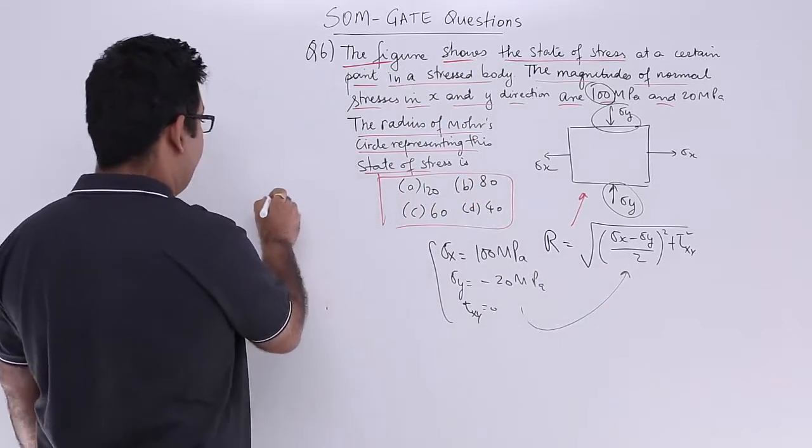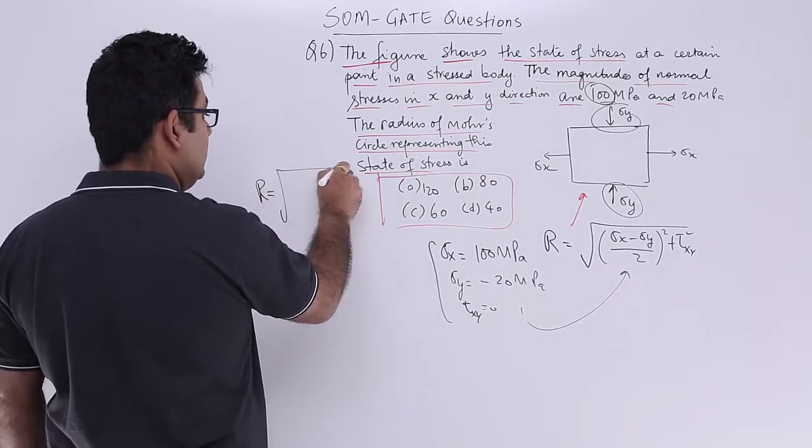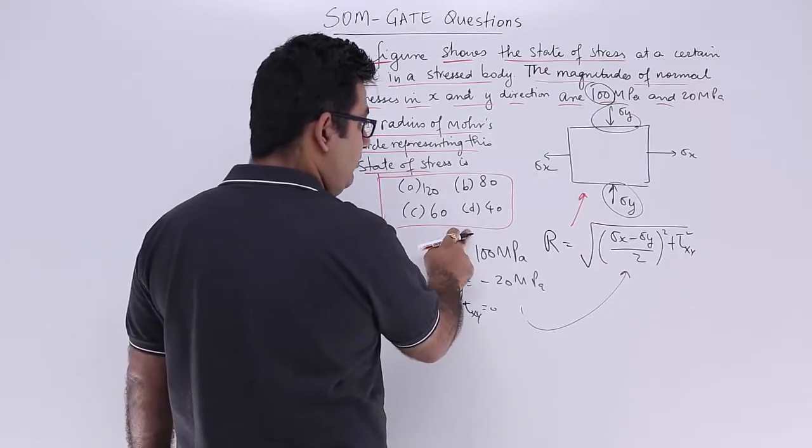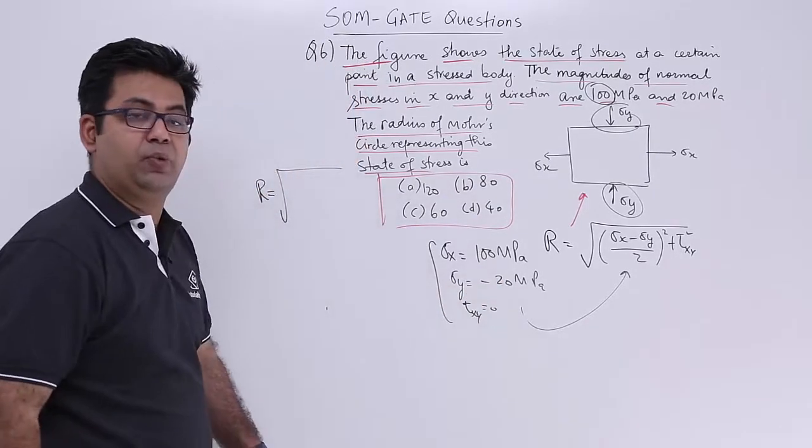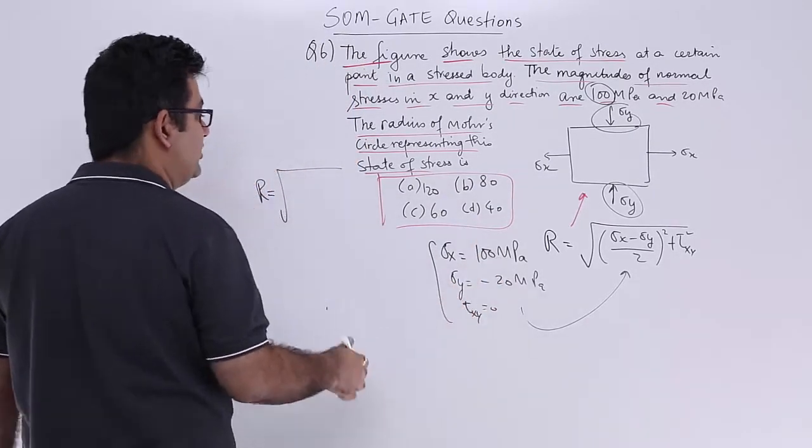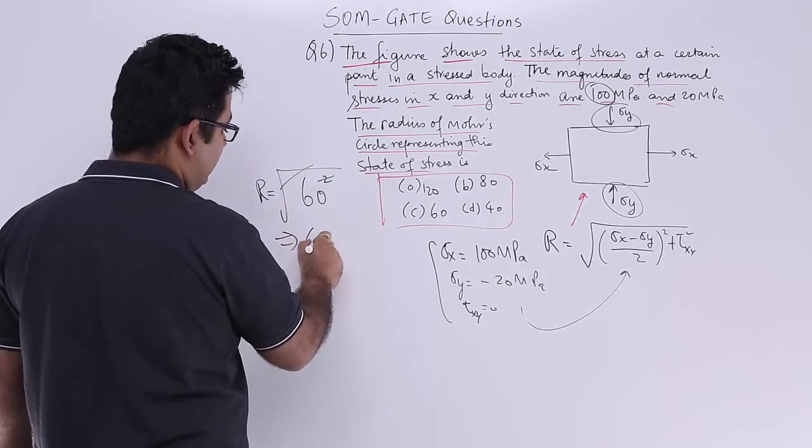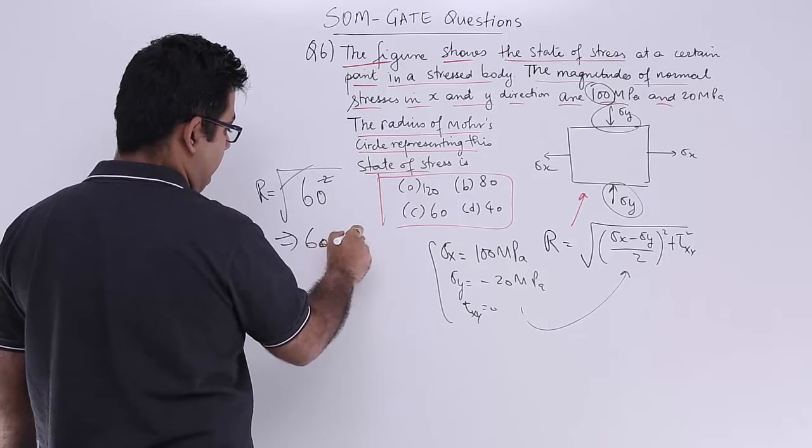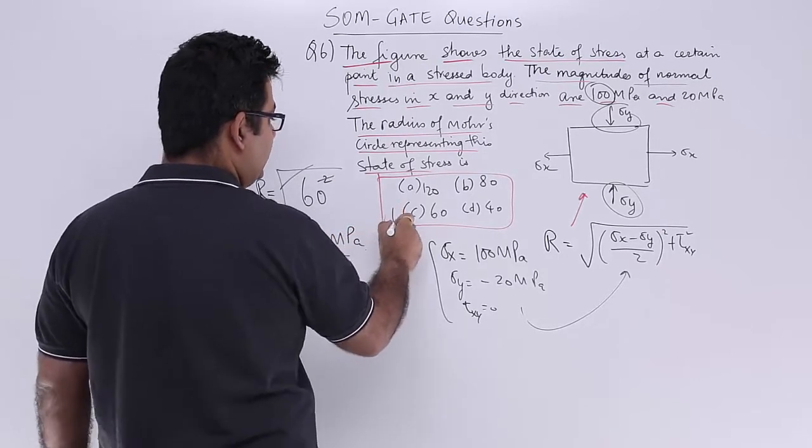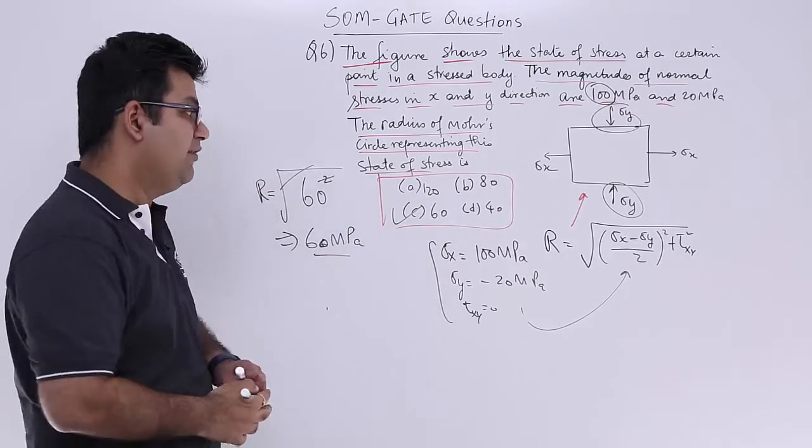So r is equal to under root 100 minus plus becomes 120, 120 by 2 is 60, so it just becomes 60 square, which is nothing but 60 MPa. So the radius of Mohr's circle is 60 MPa, which is option number c.